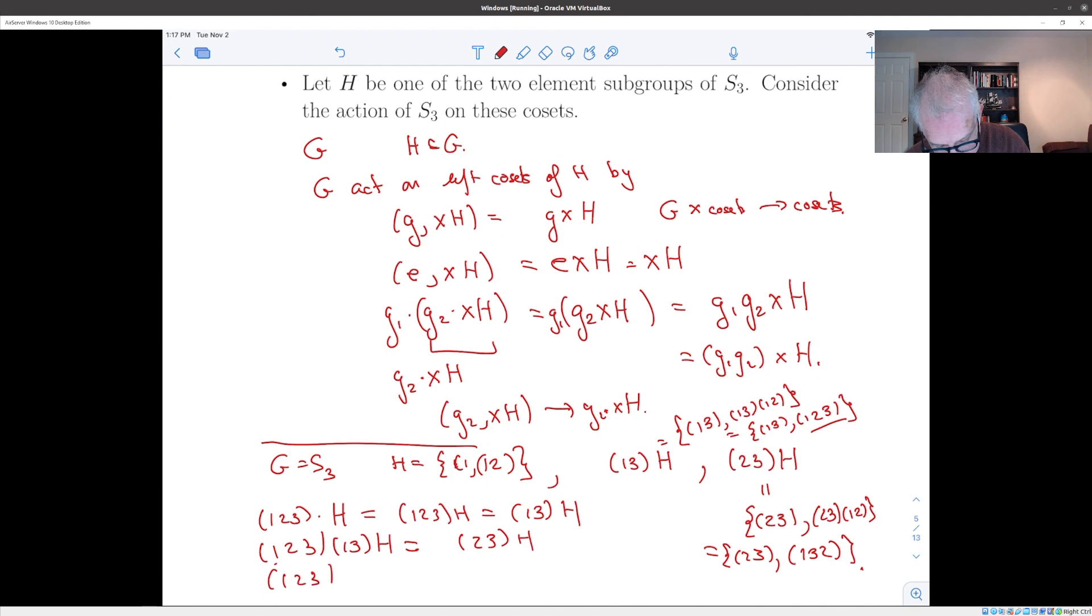And (1, 2, 3) times (2, 3)H is going to be, so (2, 3) contains (1, 3, 2). And (1, 2, 3) times (1, 3, 2) is the identity. So that contains the identity. So it must be just the subgroup H.